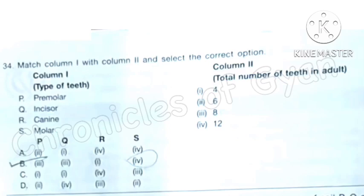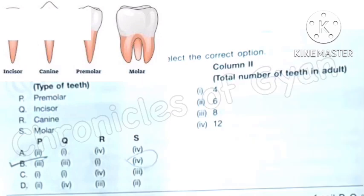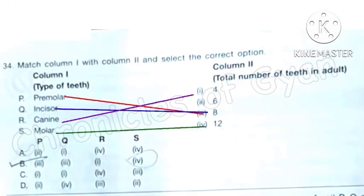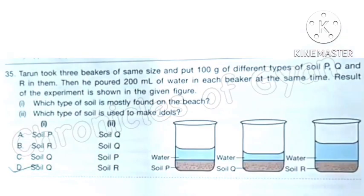Question 34: Match column 1 with column 2 and select the correct option. You can refer to the image that I have added and now the correct answer is option B: There are eight premolars and eight incisors, four canines and 12 molars.